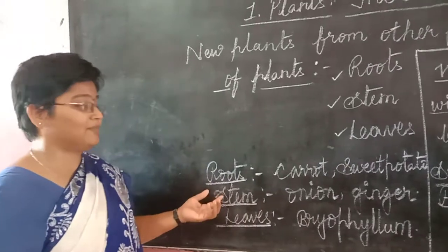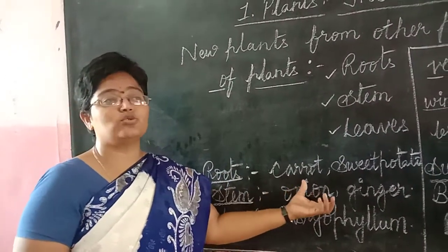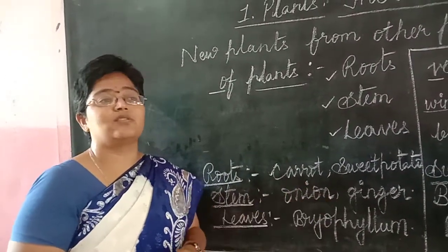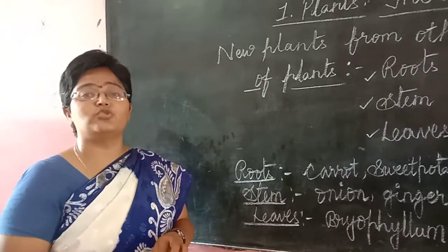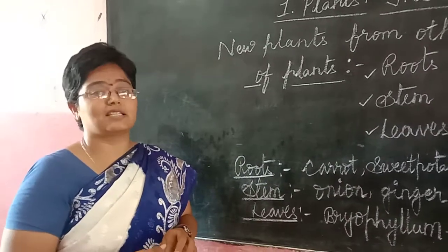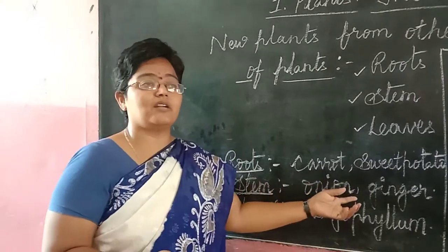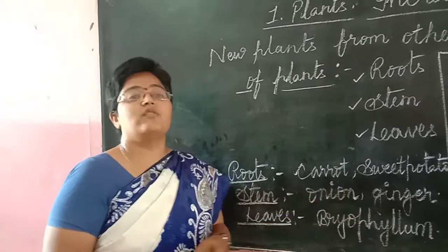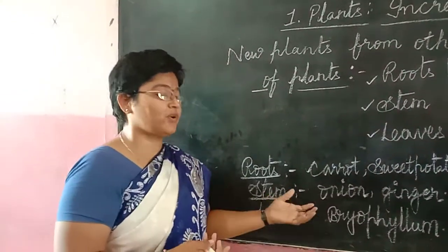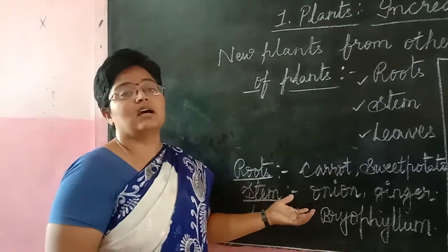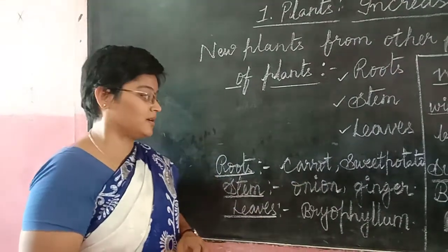What about the stem? Onion and ginger are two examples which produce new plants from their stem part. Onion and ginger are underground stems which form a new plant. These stem portions of different vegetables form a new plant.